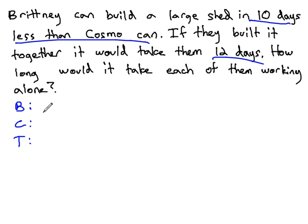Brittany does it in 10 days less than Cosmo. We aren't really told anything about Cosmo, so let's make Cosmo equal to our variable. Brittany's gonna do it in 10 days less. To get 10 days less than Cosmo, we need to subtract 10 from Cosmo's x.